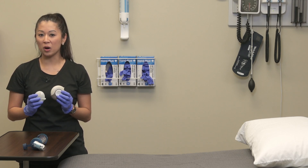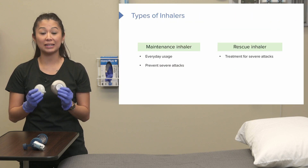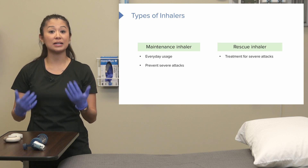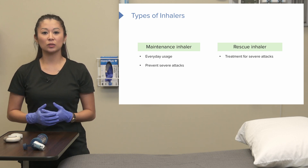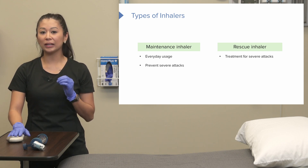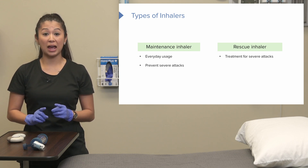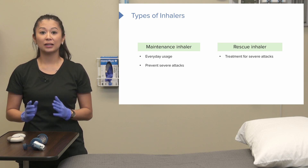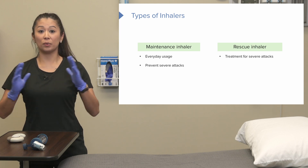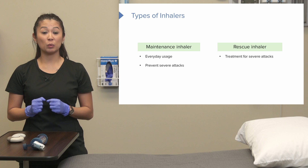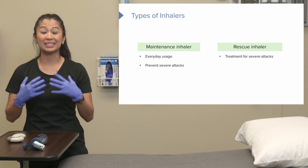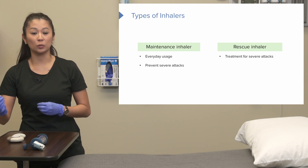Let's talk about the difference between maintenance and rescue inhalers. A maintenance inhaler is something taken every day — like a daily vitamin. For an asthma patient, a maintenance inhaler keeps down inflammation long term, hopefully preventing severe asthmatic attacks. A rescue inhaler, on the other hand, opens everything up immediately to relieve breathing during an acute attack. Think of the kid on the soccer field who suddenly can't breathe mid-play — that's when a rescue inhaler is used, not a maintenance inhaler.